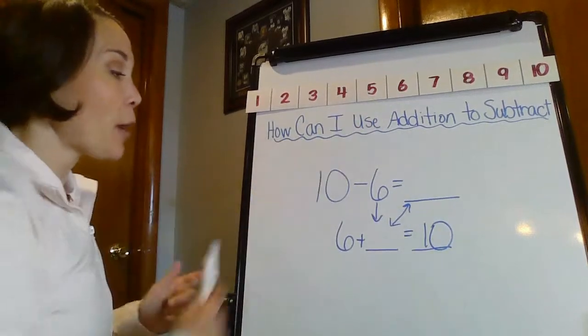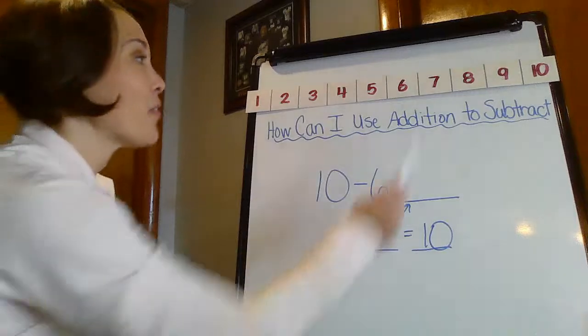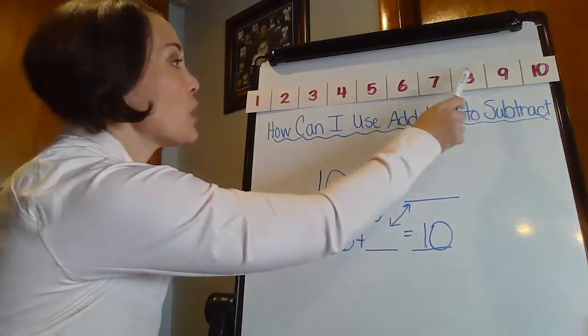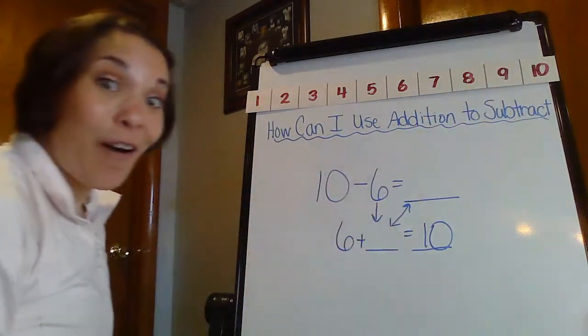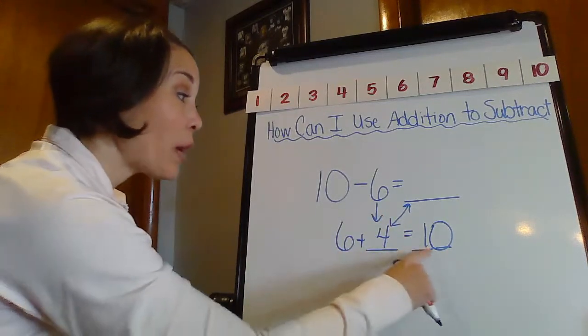Alright, let's look at our number line. 6 and I want to count up to 10. How many hops do I have? Okay, 6, 1, 2, 3, 4. We did it again. So 6 plus 4 equals 10.